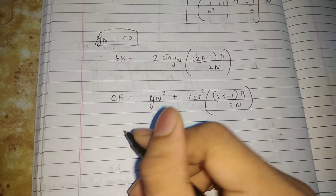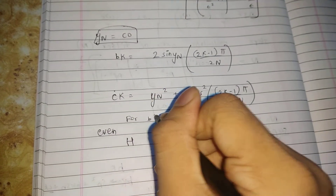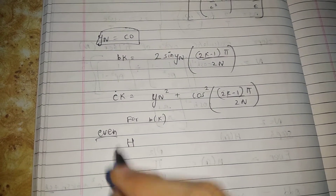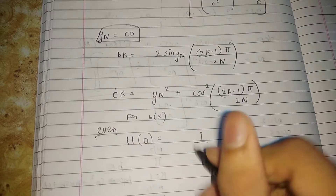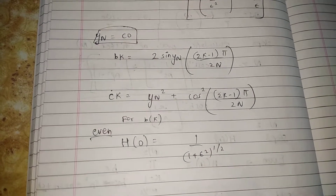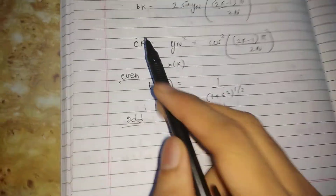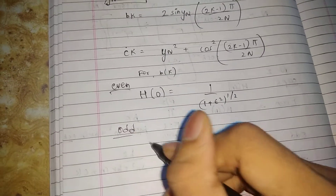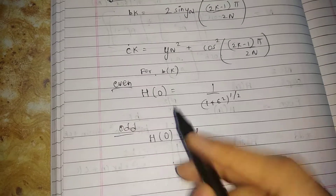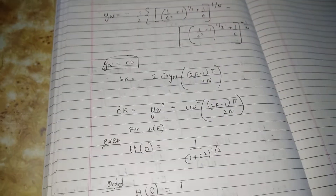For calculating b_k: if n is even, set H(0) = 1 / (1 + ε²)^(1/2); if n is odd, set H(0) = 1. Using these formulas you can find all the values needed to compute your final H(sn).